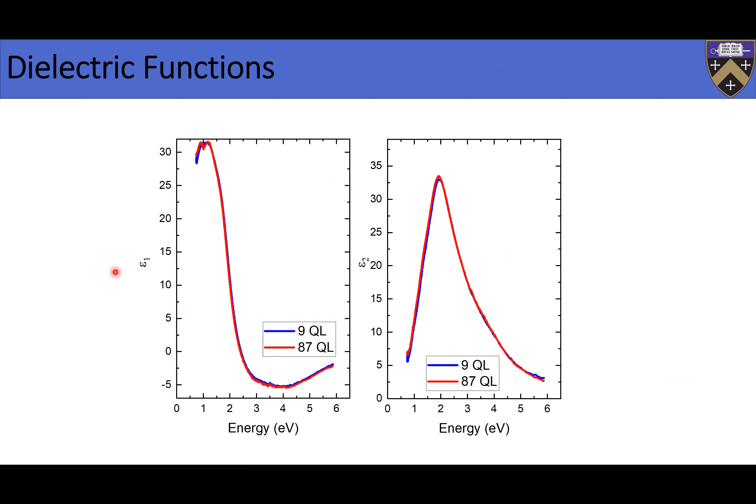The model lines are the solid lines, and we have a good fit to the experimental data. Looking at the dielectric function — epsilon 1 (real part) and epsilon 2 (imaginary part) — the blue and red lines correspond to the 9 QL and 87 QL respectively, and you can see they are almost coincident. So we have good agreement between the dielectric functions. If you try to grow very few layers like one or two, the dielectric functions actually change due to confinement effects — you can see this in TMDs quite conspicuously. But in this case, we've gone above that limit and they behave nearly like bulk.